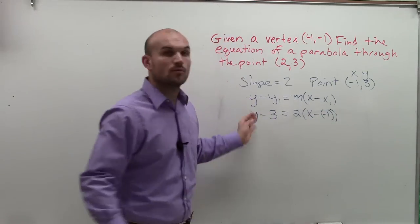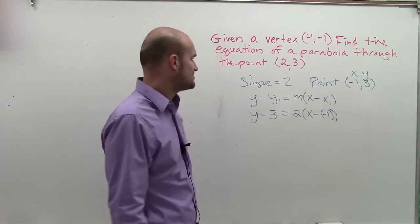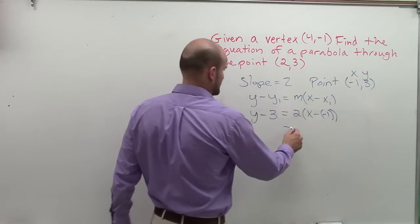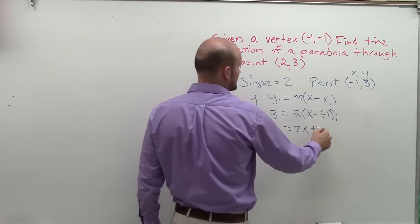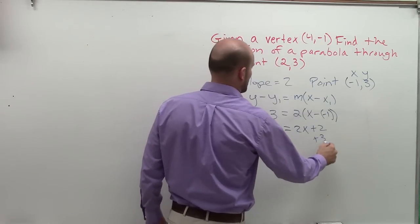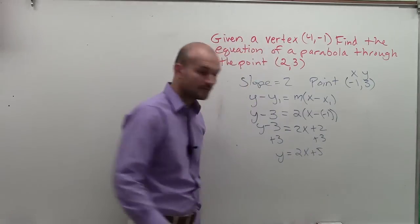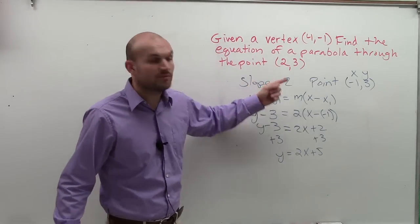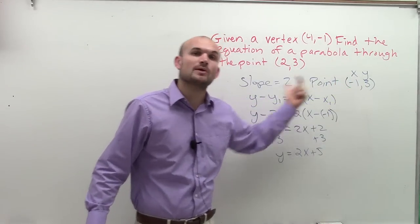Then what we do is simplify. So we do the distributive property. That's 2 times x, which is 2x. And then that's going to be a positive 1. 2 times positive 1 is 2. y minus 3. Add 3, add 3. My equation is y equals 2x plus 5. So we take our given, we plug it into the equation. We also take our other given, which is a point, and plug it in for x and y.